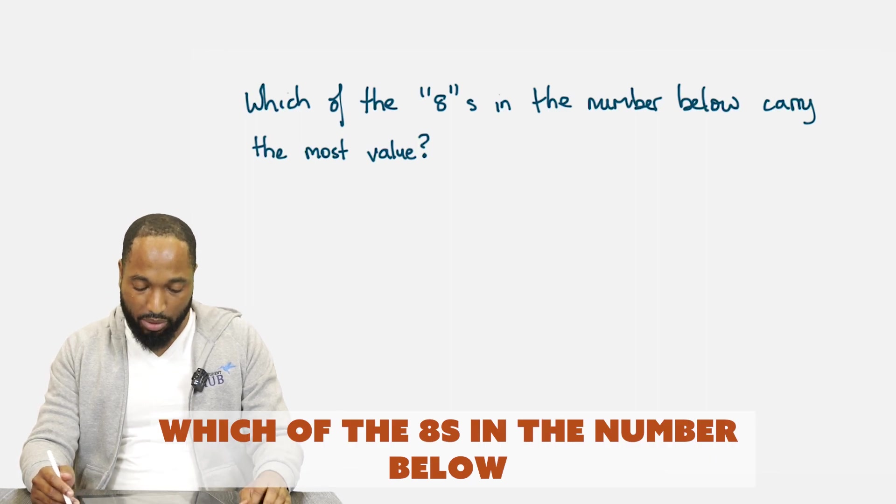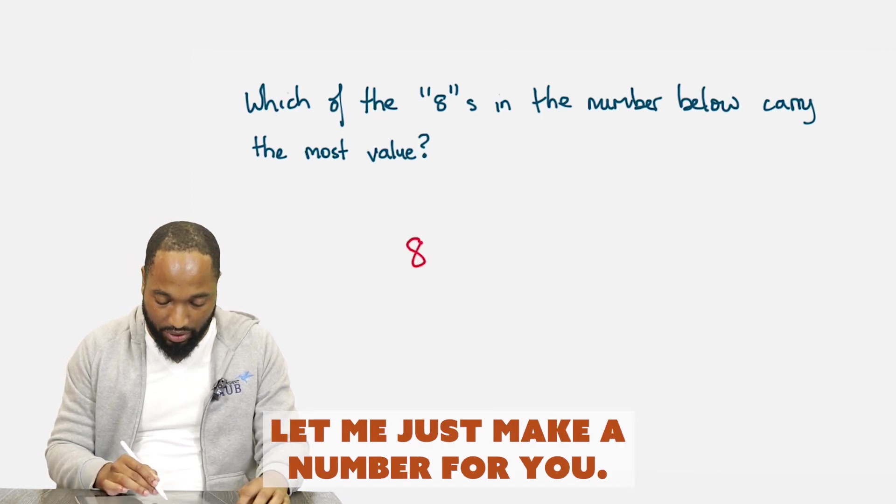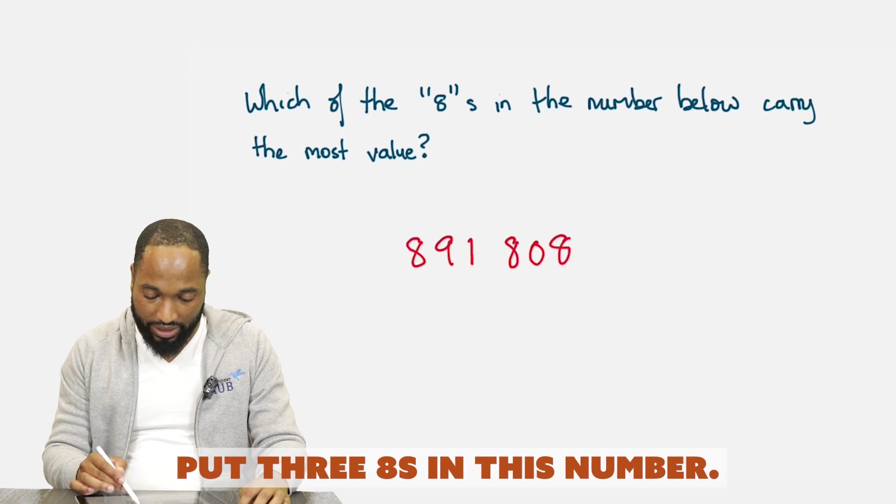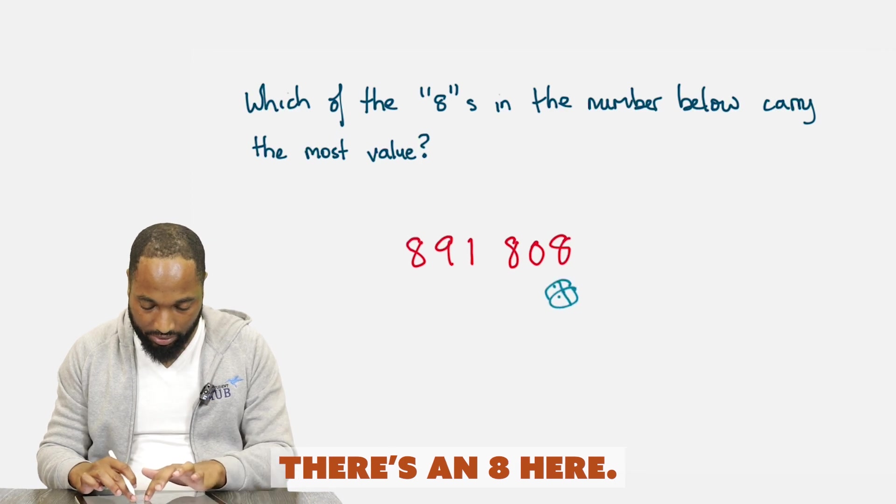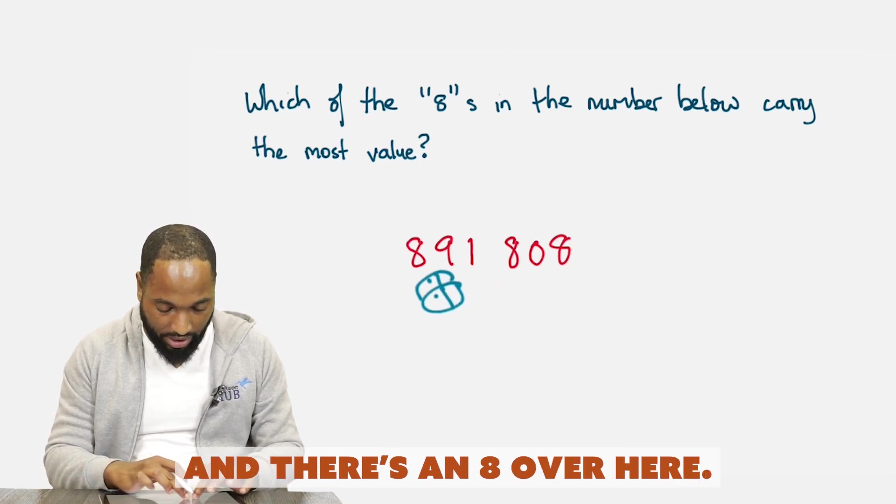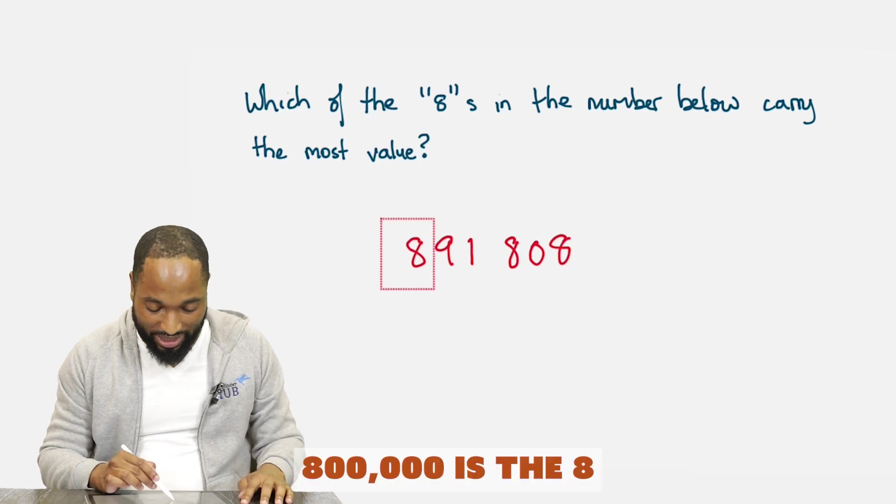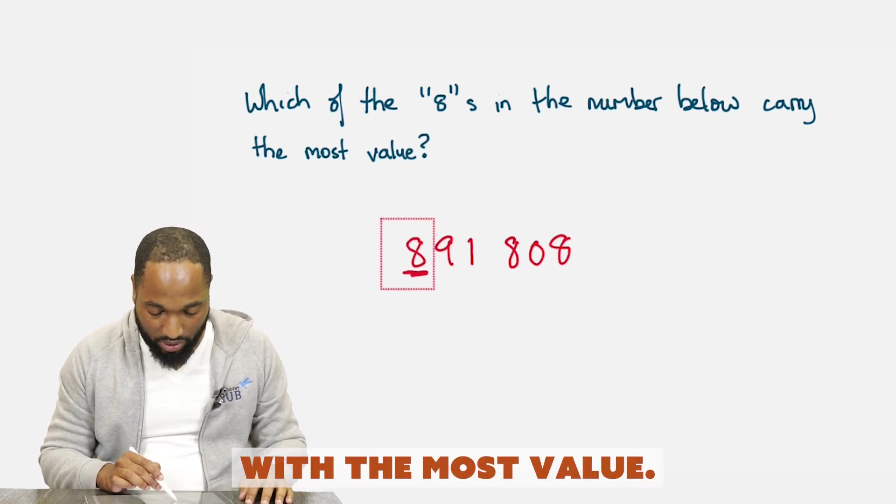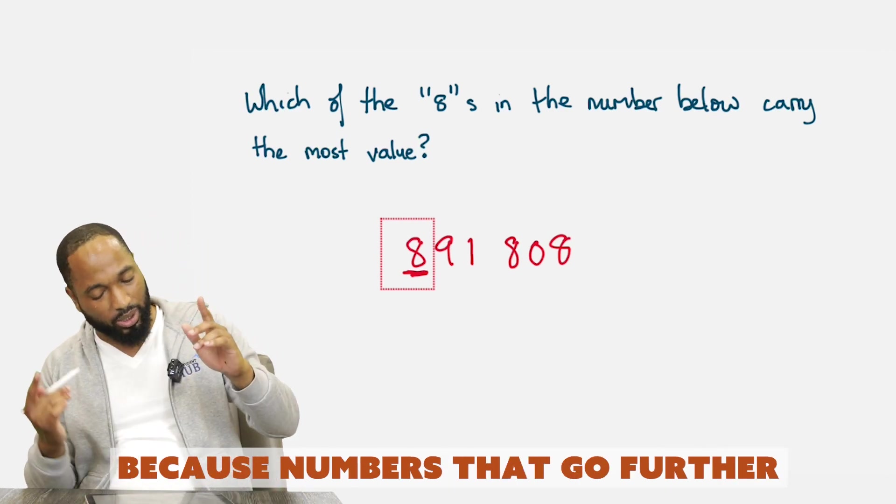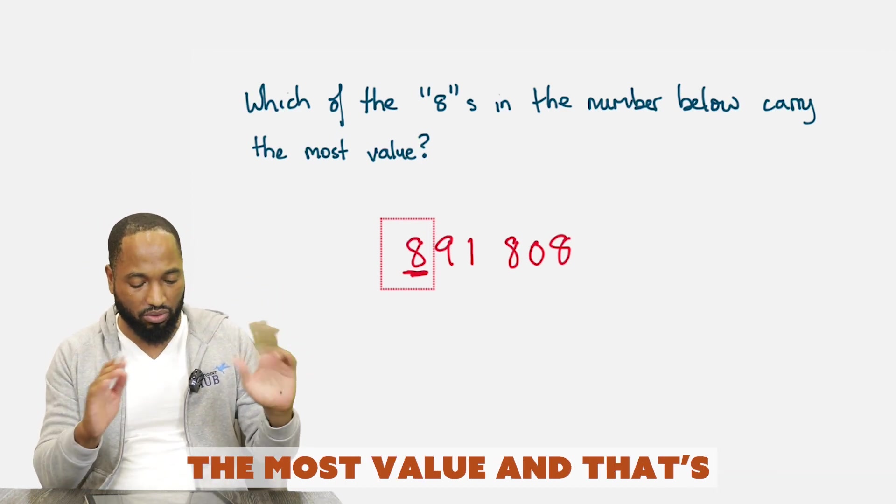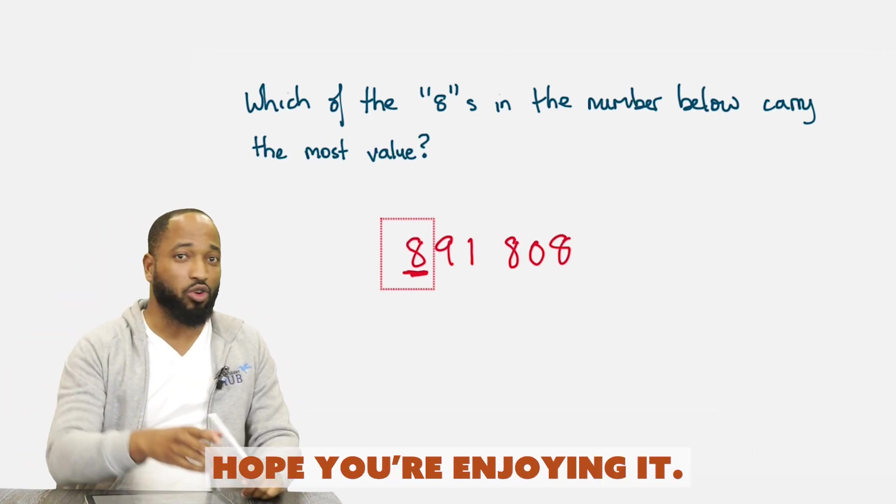Which of the eights in the number below carry the most value? So once again, we have no number below. Let me just make a number for you. Oh my, I managed to put three eights in this number. Are you seeing the three eights? There's an eight there. And there's an eight here. And there's an eight over here. Which one of them has the most value? Obviously, this eight hundred thousand is the eight with the most value. They didn't indicate normally they want you to underline it. Because numbers that go further this direction carry the most value. And that's where we'll end today's class. Remember to check over your week and do your assignments and your teacher will see you in the live class. Love and blessings.